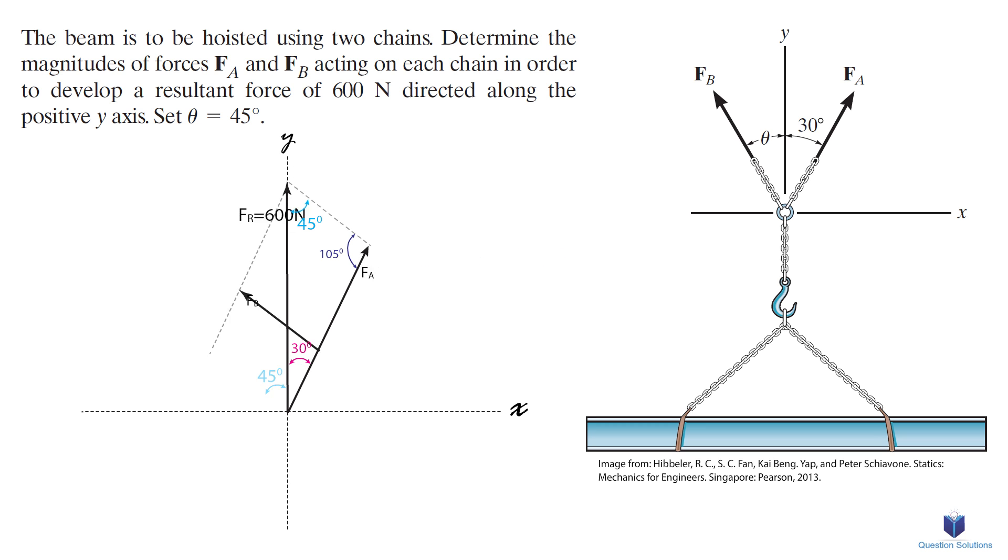Now we can draw the vectors tail to tail as follows. Now we can use the law of sines to calculate Fa and Fb.